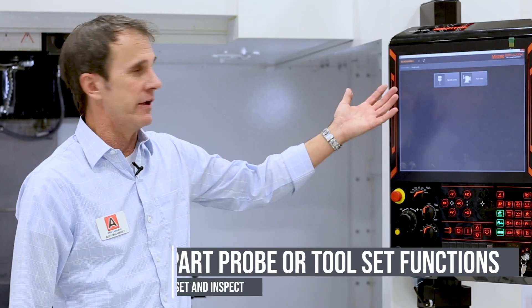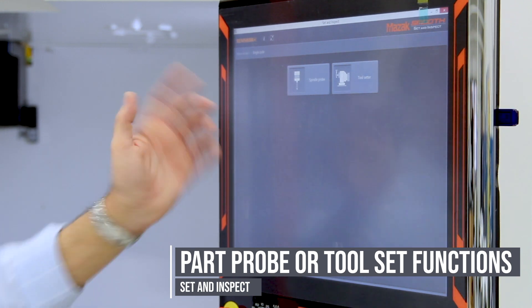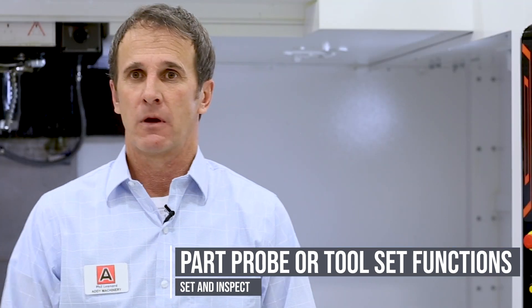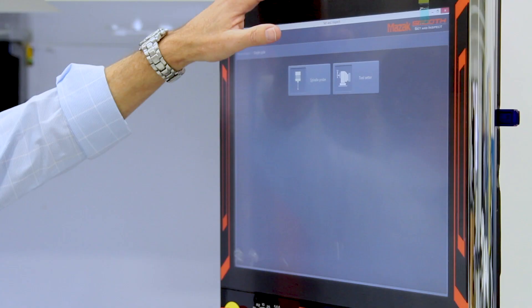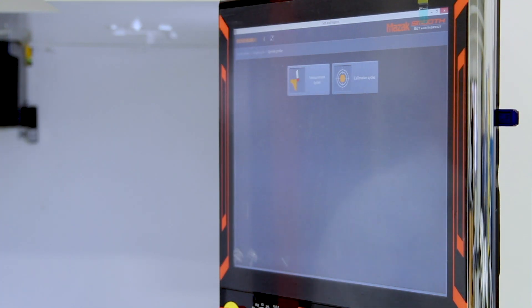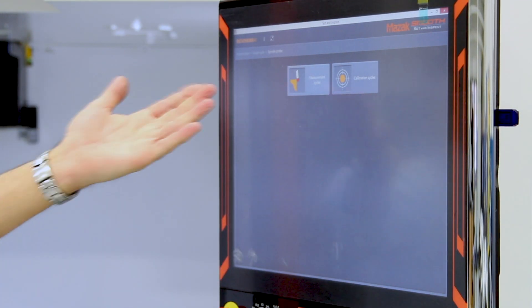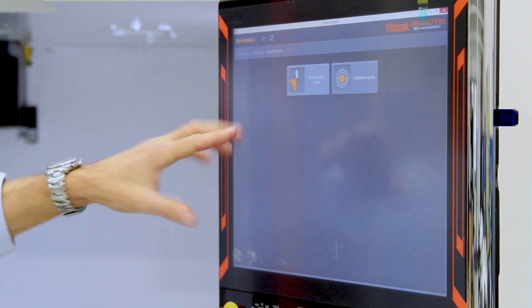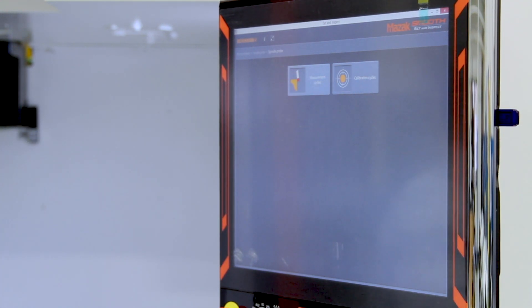So here we are on the interface, and we have a choice. This machine is equipped with a spindle probe and a tool setter. We're going to talk about the spindle probe right now. We open up the interface, and we pick spindle probe. Next screen, very simple, very clean. We have measurement cycles and calibration cycles all built in. It takes all the hard thinking and the manuals out of the mix. It's super simple.